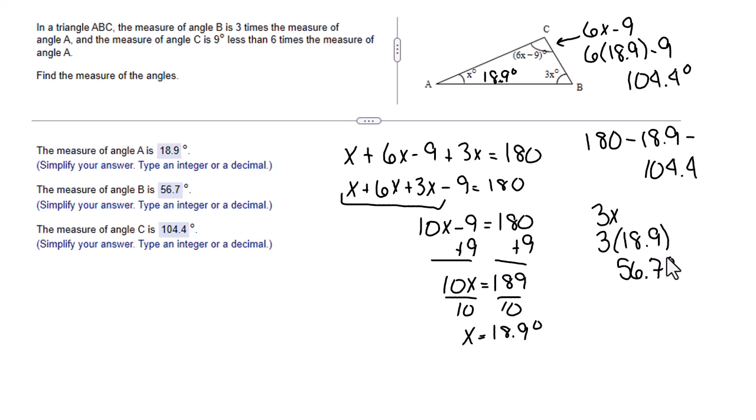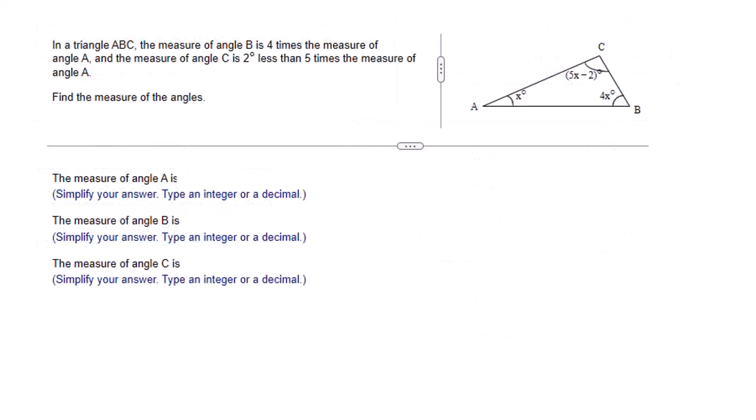Now it's your turn to try. Let's look at the one you're going to try. Here's your problem. In a triangle ABC, the measure of angle B is four times the measure of angle A. The measure of angle C is two degrees less than five times the measure of angle A.